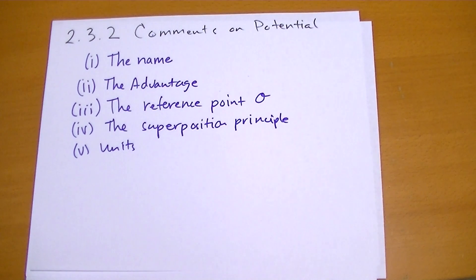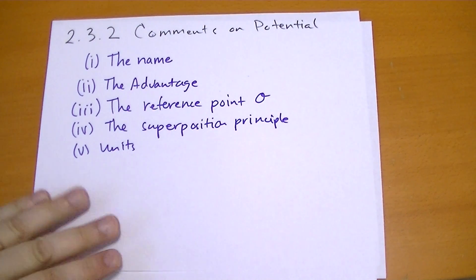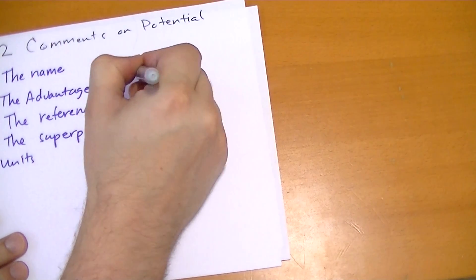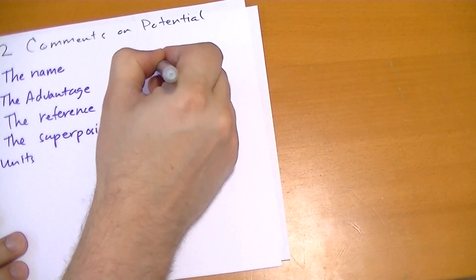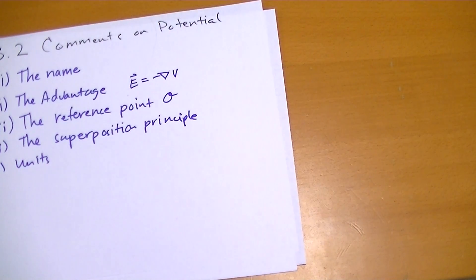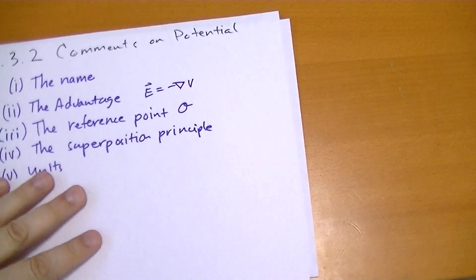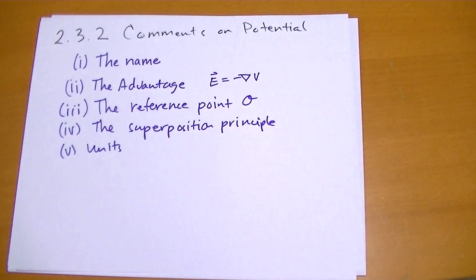The advantage of using the potential formulation is that we have some vector field that is defined simply by the gradient of a scalar field. Scalar fields are much easier to write down mathematically because you only need to know basically one component. You don't need to know the x, y, and z, or the r, theta, phi depending on what coordinates you're using.